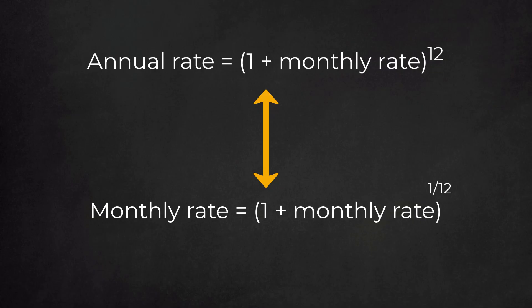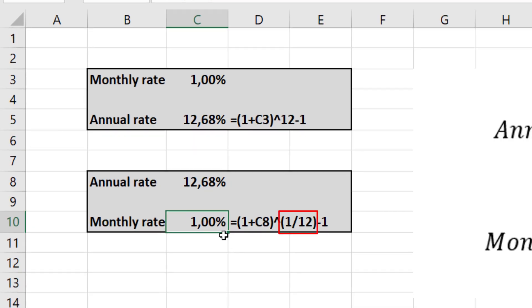Okay, now we know how to get from monthly to annual interest rates and to go back from annual to monthly rates. Don't forget to put the exponent 1 twelfth between parentheses. As you can see this was our starting point.